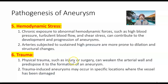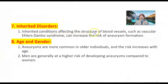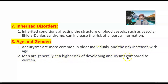Physical trauma such as injury or surgery can weaken the arterial wall and predispose it to aneurysm formation. Even catheterization may lead to aneurysm. Trauma-induced aneurysms may occur in specific locations where the vessel has been damaged, such as in road traffic accidents. Regarding inherited disorders, conditions affecting blood vessel structure such as vascular Ehlers-Danlos syndrome can increase the risk. Aneurysms are more common in older individuals and the risk increases with age; men are generally at higher risk compared to women.